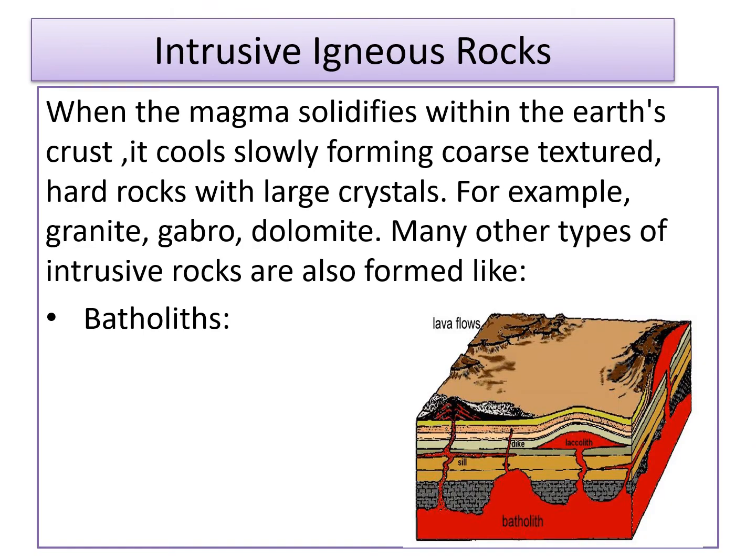Now we come to intrusive igneous rocks. When the magma solidifies within the earth's crust, it cools slowly forming coarse textured hard rocks with large crystals. Examples include granite, gabbro and dolomite. Many other types of intrusive rocks are also formed.